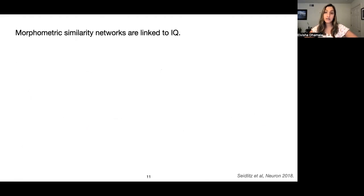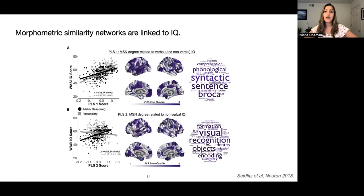Other work has demonstrated that the degree of inter-regional similarity of morphometric features, including gray matter structure, myelination, and curvature, is associated with IQ. Specifically, they've reported that crystallized or language abilities and fluid or executive function abilities are uniquely related to patterns of brain morphometry. So based on these works, we know there exist underlying relationships between brain structure and function and behavior. But are these relationships shared across age groups or sexes?